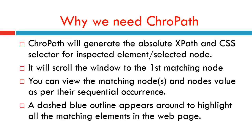Why we need Crowpath? Crowpath will generate the absolute XPath and CSS selector for an inspected element or selected node. It opens as a sidebar tab in the webpage where we can access the DOM, inspect the element in the elements tab, and write the XPath and CSS selector in the Crowpath tab. It will scroll the window to the first matching node, and you can view the matching node and node values as per sequential occurrences.